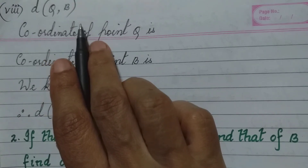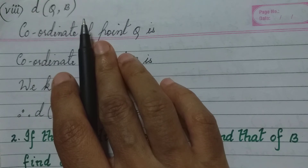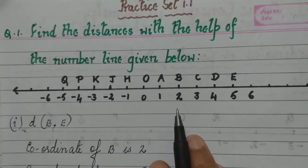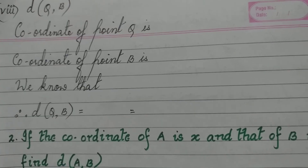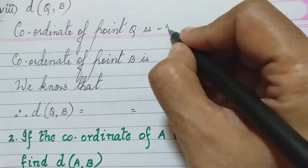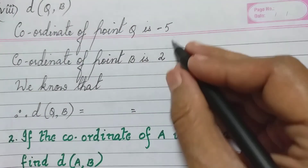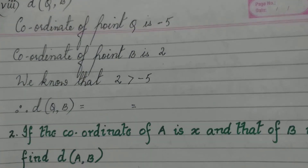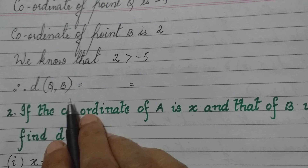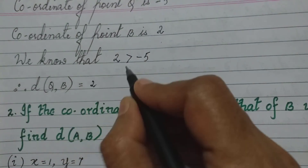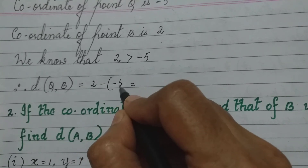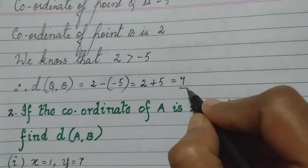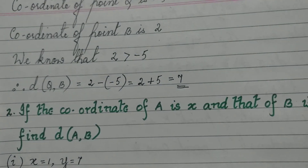Last sub-question: distance between points Q and B. The coordinate of point Q is minus 5, and the coordinate of point B is 2. The positive number is always greater than the negative number, so 2 is greater than minus 5. Therefore, the distance between Q and B is 2 minus (minus 5), which is 2 plus 5, equal to 7. We have now completed the first question.